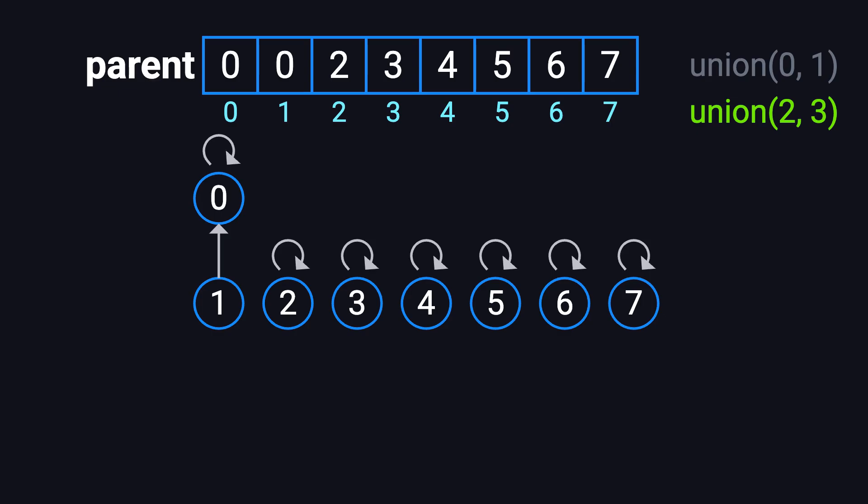Next, we perform Union(2, 3). Similarly, we choose 2 as the new root, so we set parent[3] equals 2.